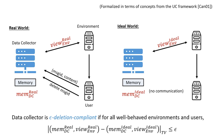By default, we take epsilon to be something negligible in the security parameter, but the definition also makes sense for larger epsilon, and sometimes you need larger epsilon.